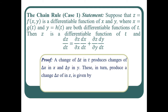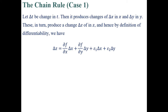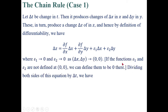Let delta t be a change in t. There will be changes delta x and delta y in x and y respectively. Due to changes delta x and delta y in x and y, there will be a change in z, say delta z. Since z = f(x,y) is differentiable, delta z = (∂z/∂x)delta x + (∂z/∂y)delta y + ε₁ delta x + ε₂ delta y, where ε₁ and ε₂ tend to 0 when (delta x, delta y) tends to (0, 0). Note that if ε₁ and ε₂ are not defined at (0, 0), they must be defined as 0 at that point.